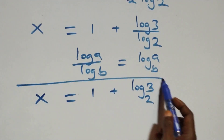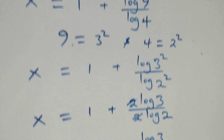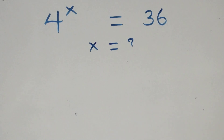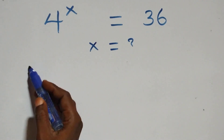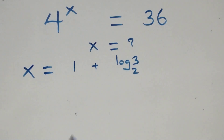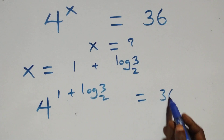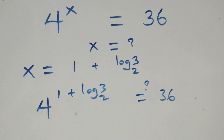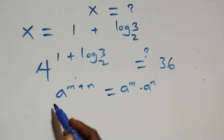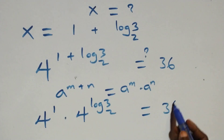So the value of x is 1 + log₂3. Let's check whether this satisfies the original equation by substituting x = 1 + log₂3. Using the exponent rule a^(m+n) = a^m · a^n, we get 4^1 · 4^(log₂3) = 36. We can write 4 as 2², so this becomes 4 · (2²)^(log₂3) = 36.